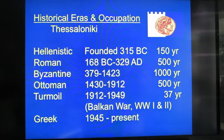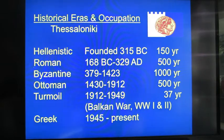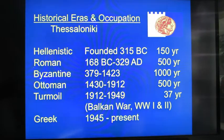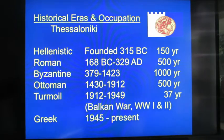Here are the historical areas I'll go through in my series of presentations: the Hellenistic founding in 315 BC, then the Roman era — about 500 years — the Byzantine era — about a thousand years — the Ottoman occupation — about 500 years — and then that period of turmoil: the Balkan Wars, World War One and Two, and the Greek Civil War following the removal of the Nazis in 1945.